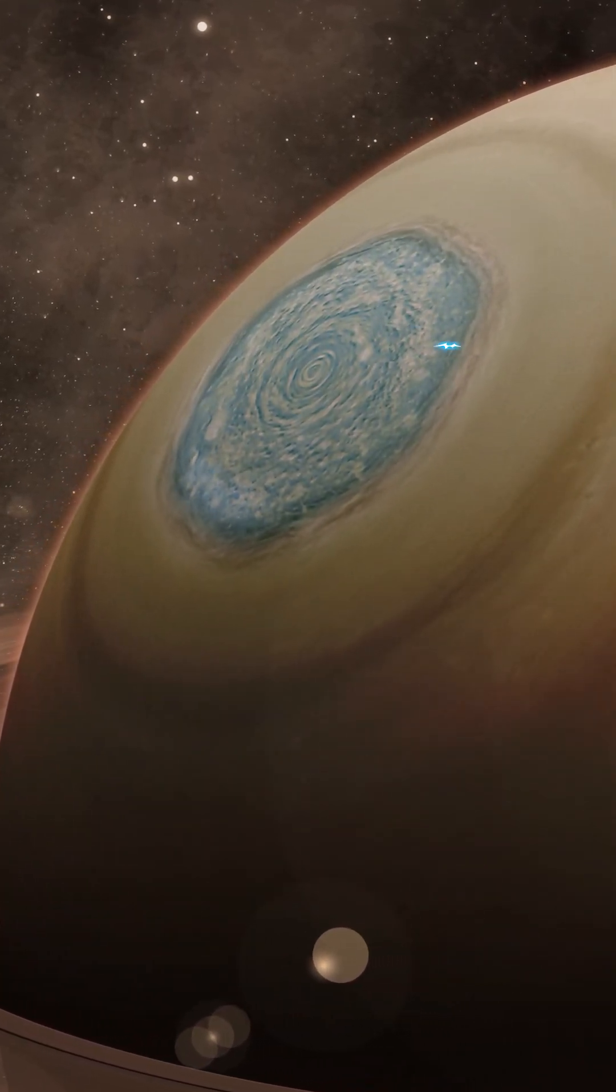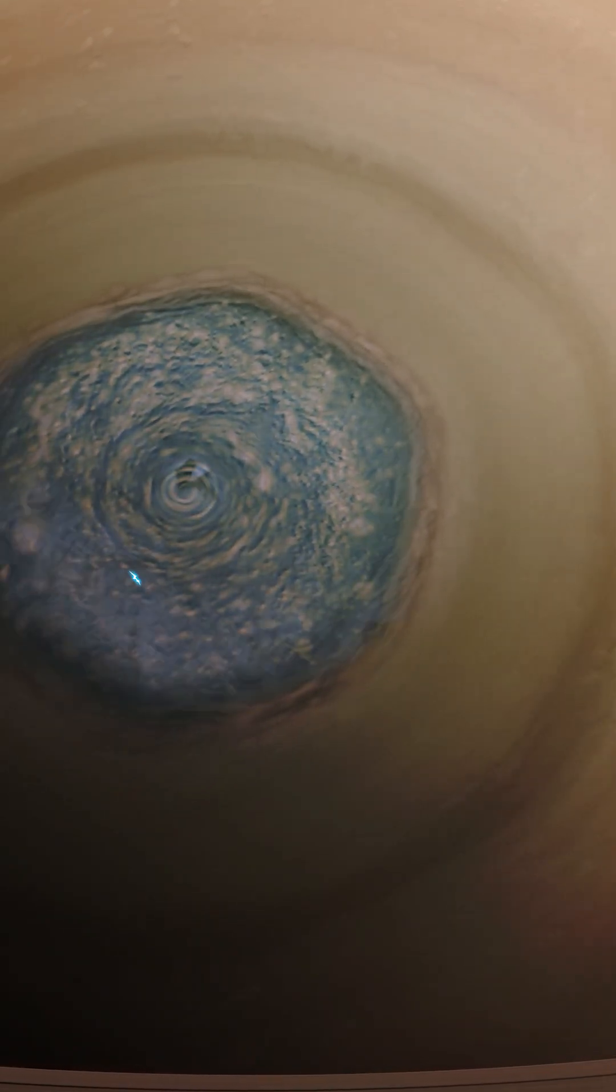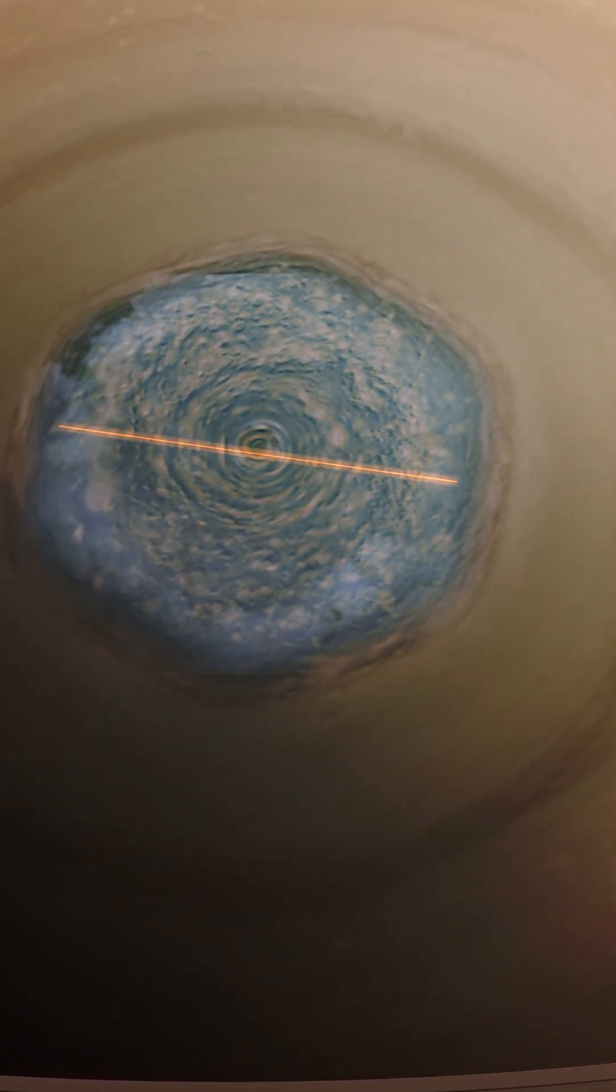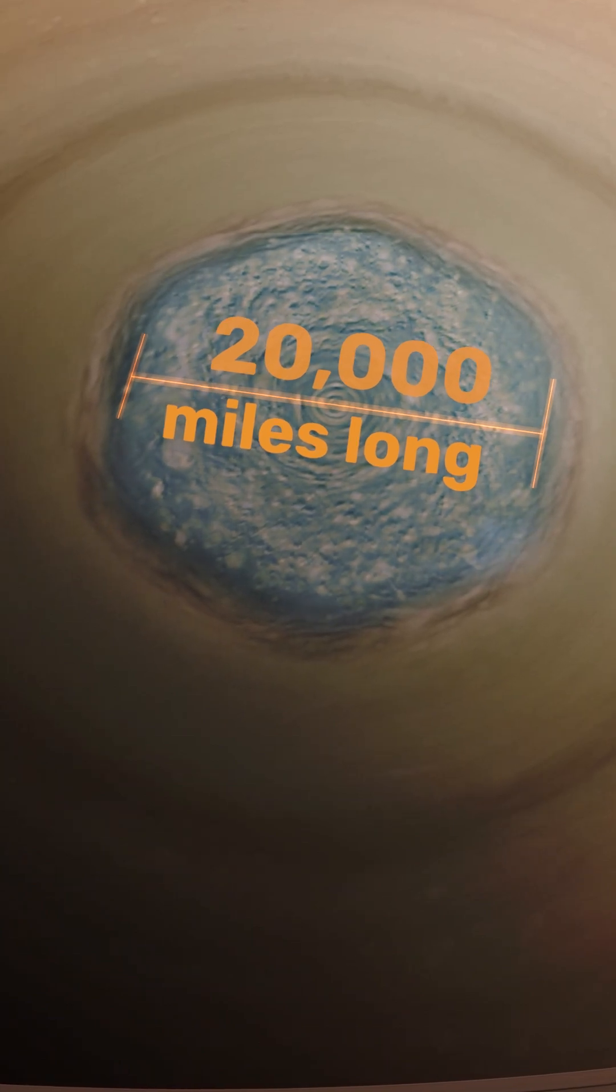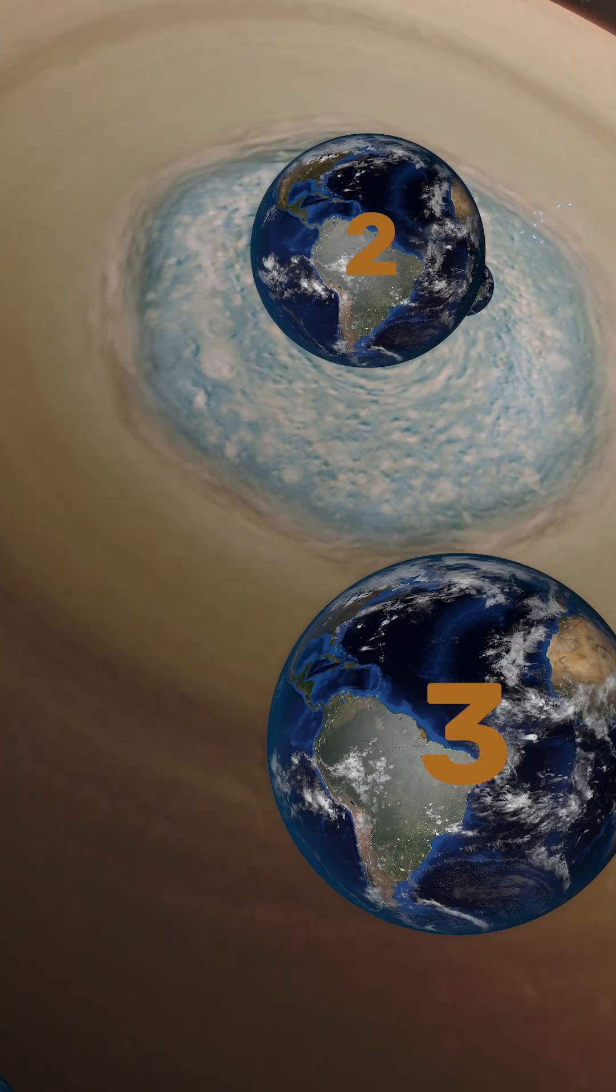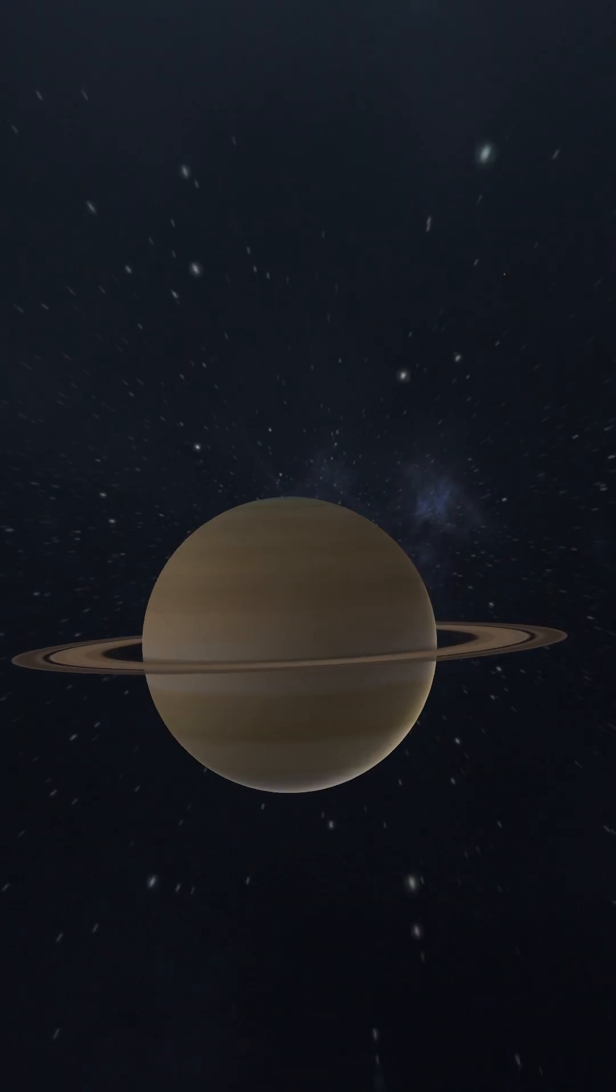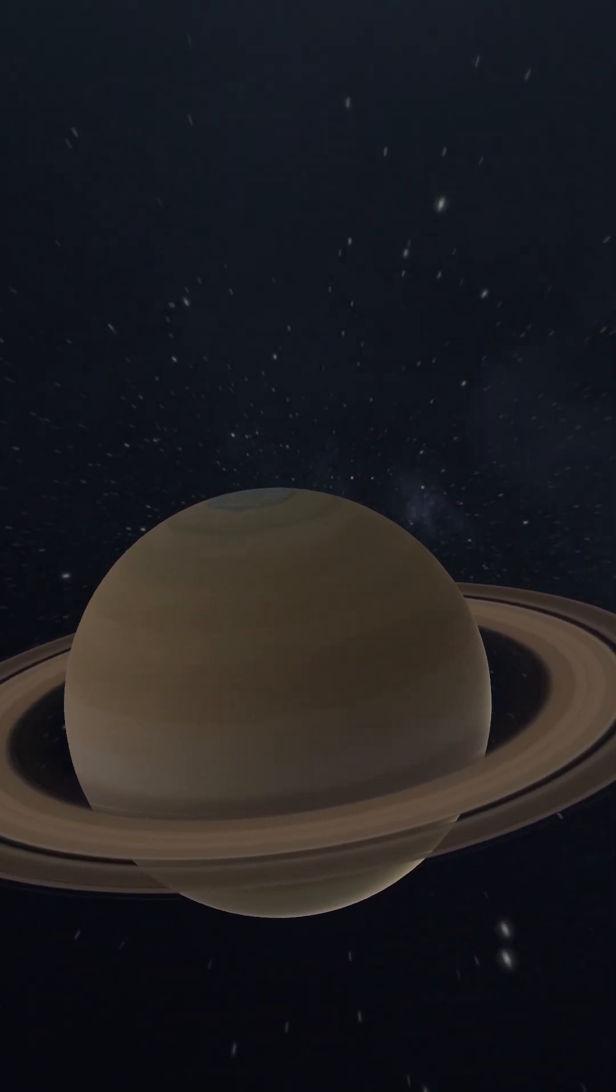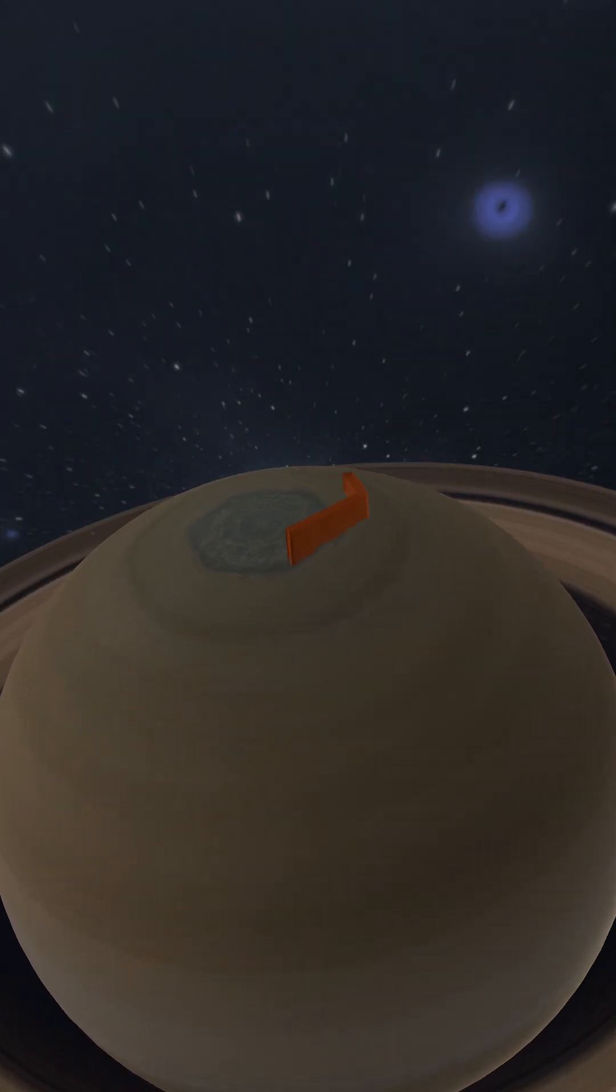That's right, a hexagon. It's a massive jet stream over 20,000 miles wide that's been raging for decades, if not centuries. To give you an idea of its scale, it's large enough to fit four Earths inside it. But why is it a hexagon? And if it's moving so fast, then why is it forming natural walls?